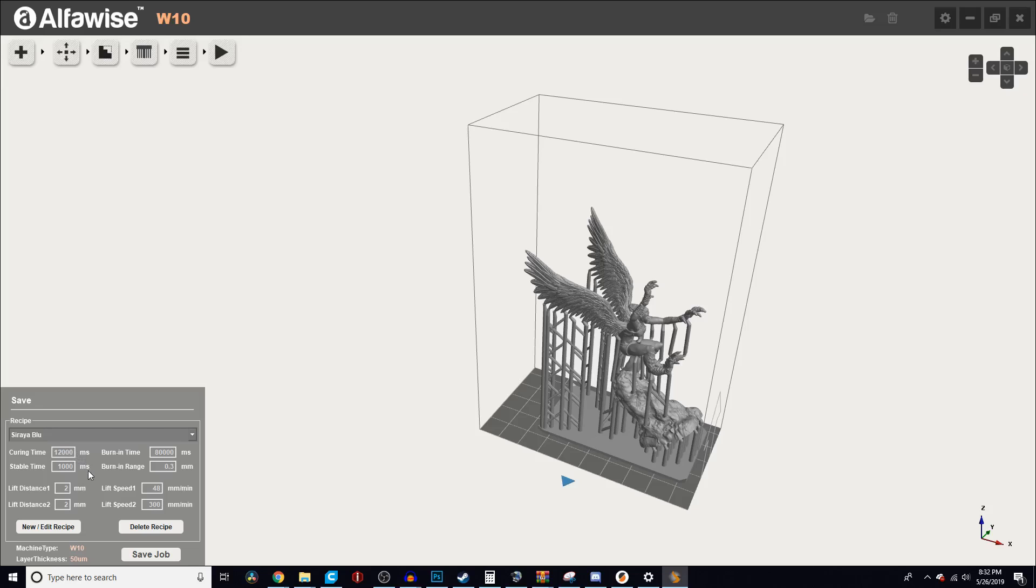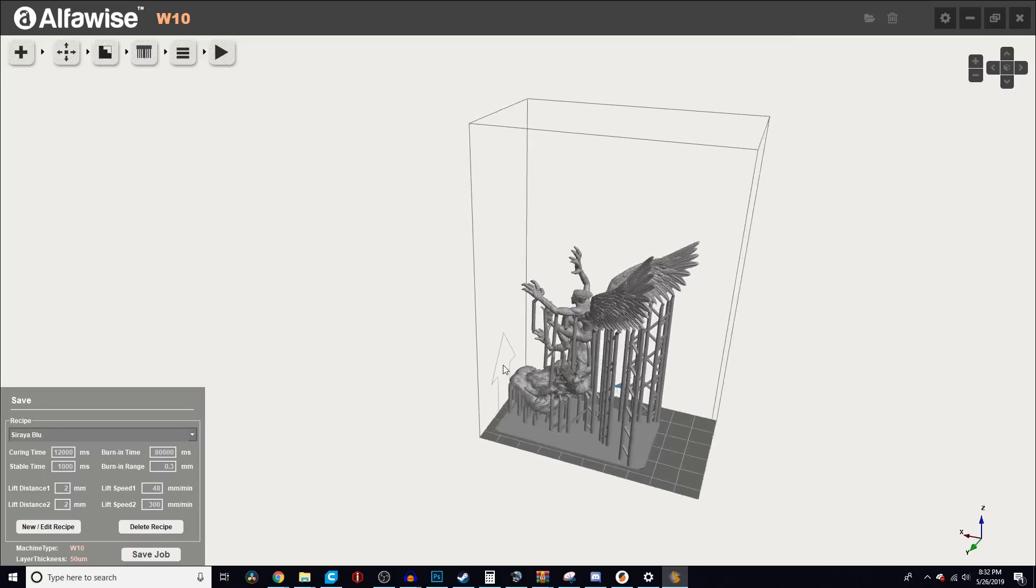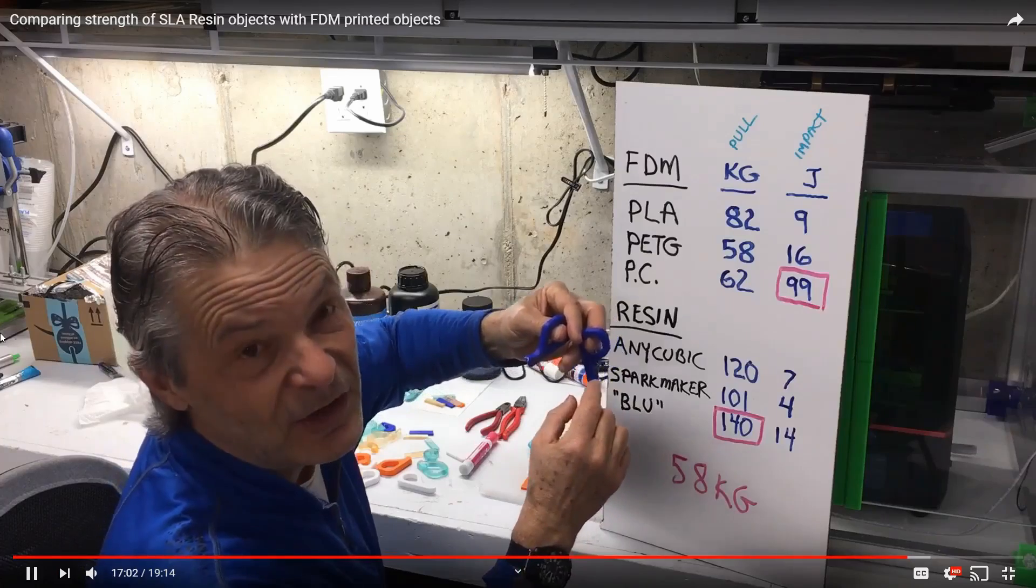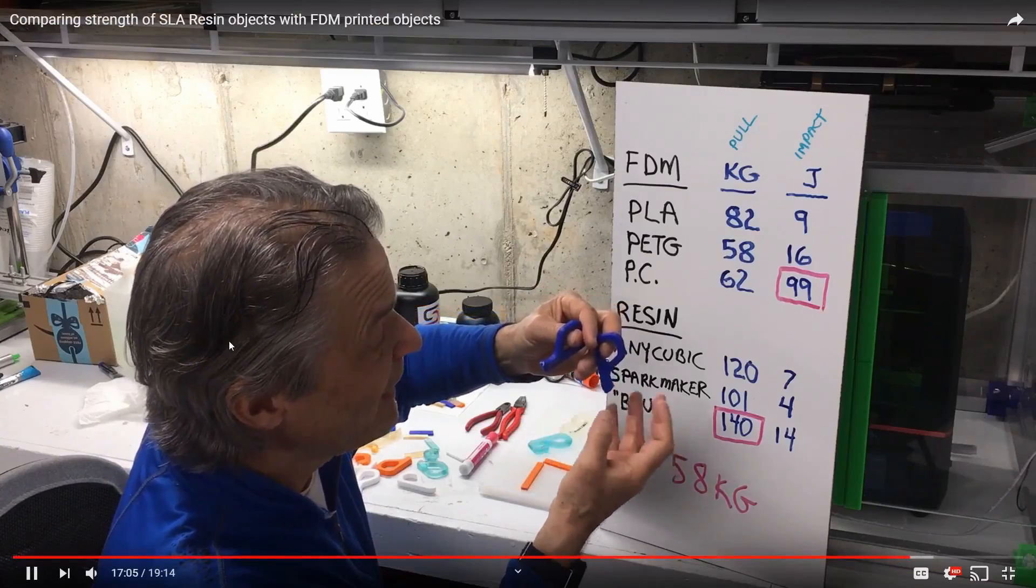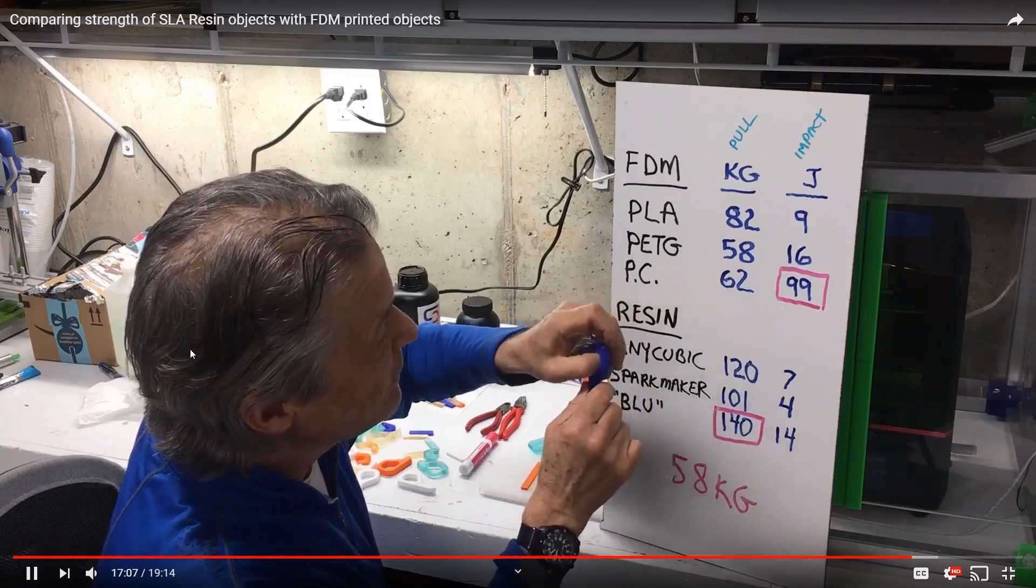That's what worked for me. It might vary a little bit. I have the AlphaWise W10. I know a lot of people have the Anycubic Photon. I would assume it would be pretty similar, but at least if nothing else that'll give you a good starting point.